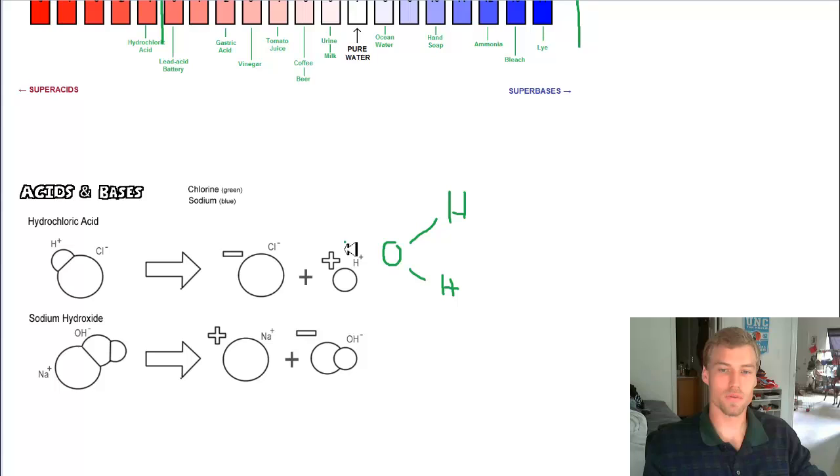So what happens is that the water molecules are going to be surrounding, they're going to surround these and pull them apart. So my water molecules are going to be surrounding these and pulling them apart. And this hydrochloric acid, it's adding in more of my hydronium ions, my H+ ions. And so that's going to be decreasing my pH.